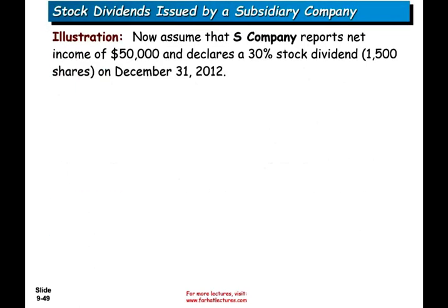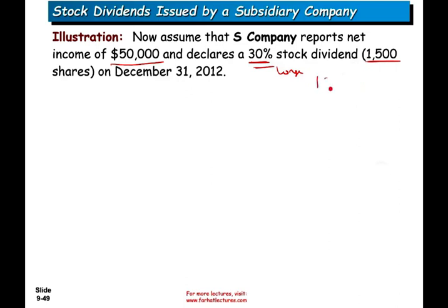At the end of the year, assume S company reported $50,000 in income and declared a 30% stock dividend, which is an additional 1,500 shares. Now, 30% is a large stock dividend because it is greater than 20 to 25%. So it is classified as a large stock dividend.